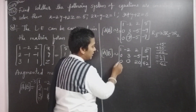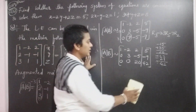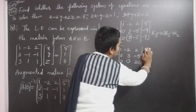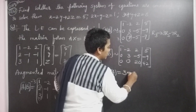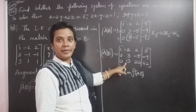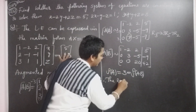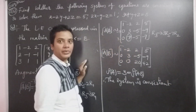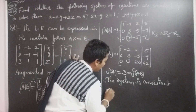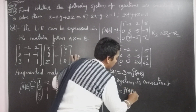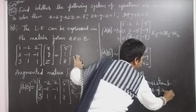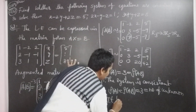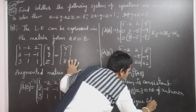Now we can check consistency. Rank of A — eliminating the last column — we count the non-zero rows: three non-zero rows. Rank of AB including the last column is also three. Both ranks are equal. Therefore the system is a consistent system. Since rank of A equals rank of AB equals 3, which equals the number of unknowns X, Y, Z — three unknowns — it has a unique solution.